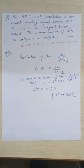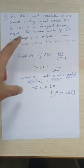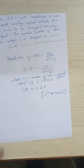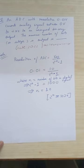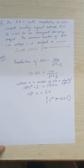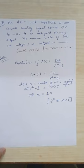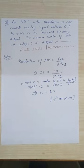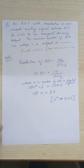We are given an ADC that has a resolution of 0.01 volt and it converts analog signals between 0 to 10 volts to a binary output. We have to find the minimum number of bits in the output. The maximum number of bits can be any bits, but we have to find the minimum.